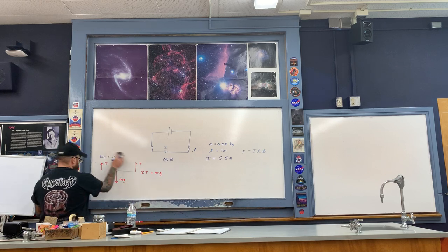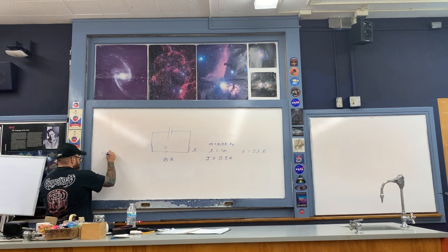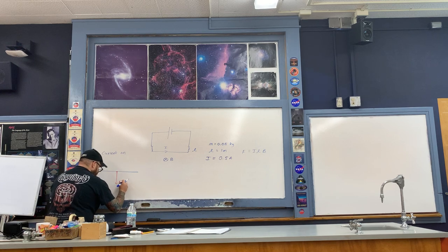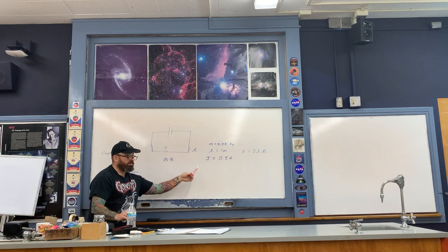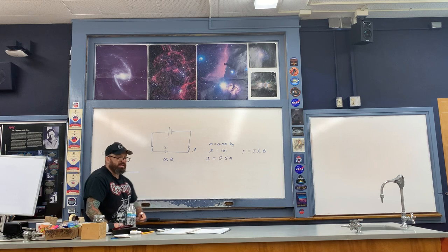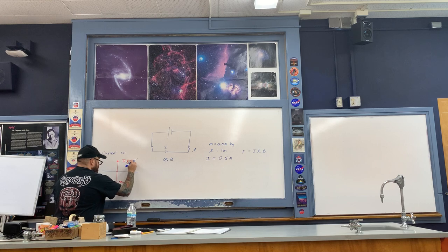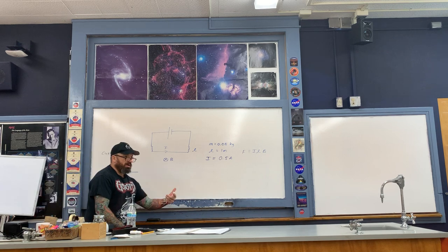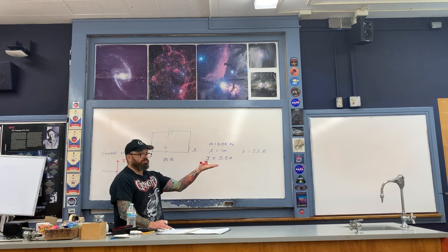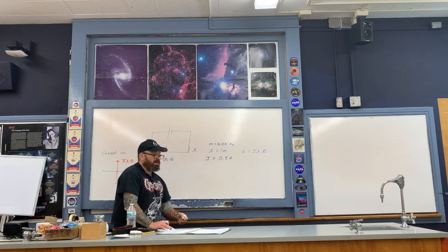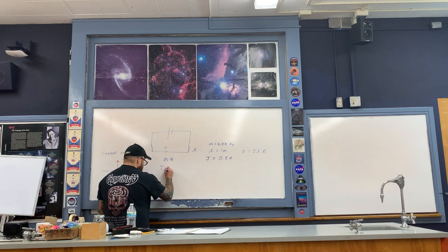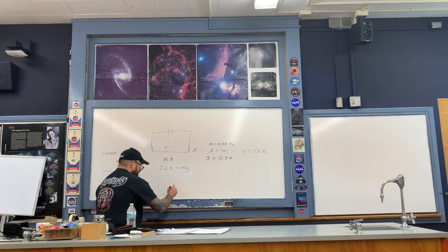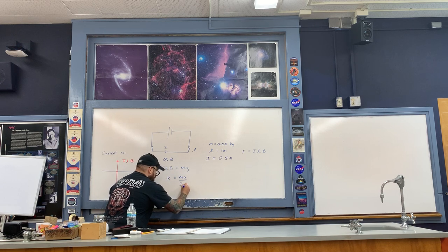Our diagram changes. With the current on, here's the wire, here's the weight mg, and because the magnetic force is applied equally at all points along the wire, it behaves as if applied at the center of mass. So at the center of mass, the force ILB acts upwards, and the two forces cancel out because the wire is just sitting there. Therefore, ILB = mg. Now we just solve for B: B = mg over IL.